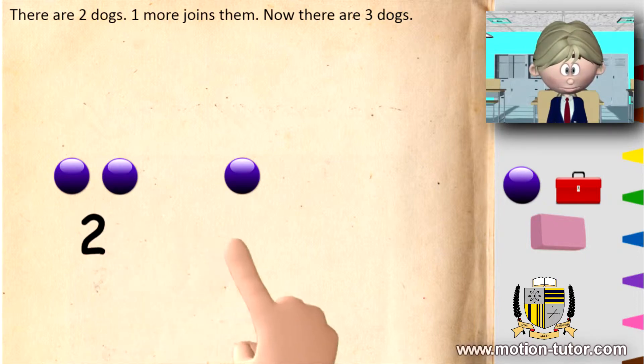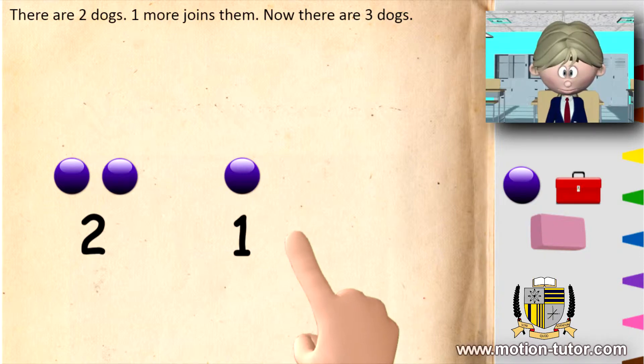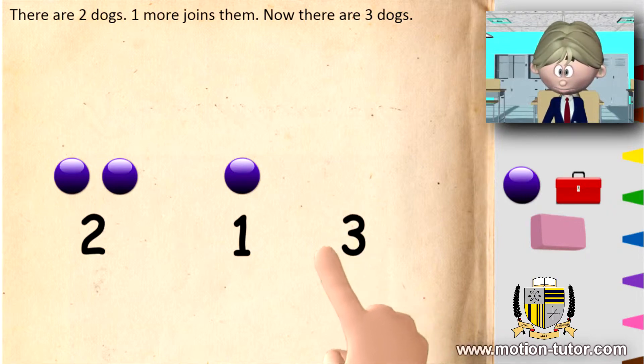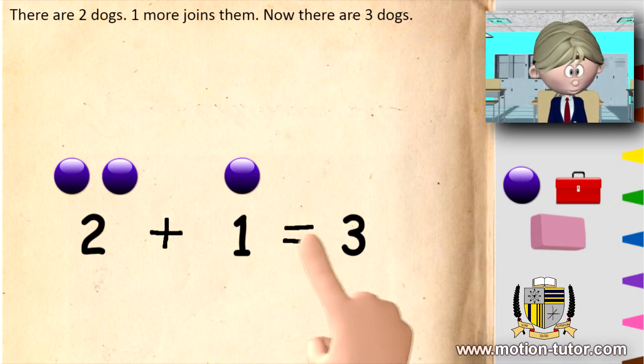And then together we are going to have three dogs. The two plus one is equal to three.